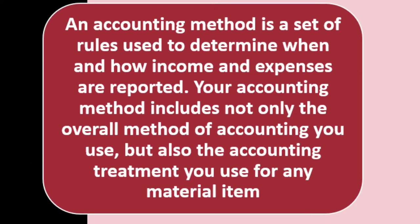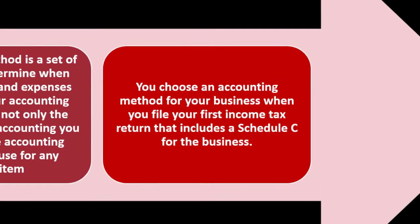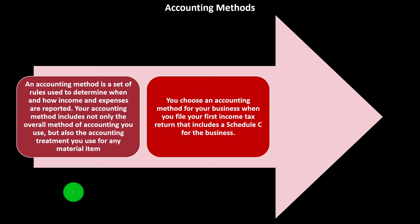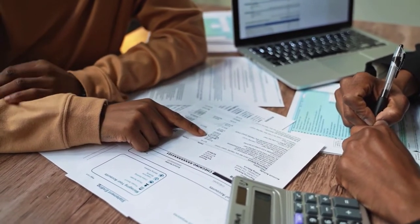An accounting method is a set of rules used to determine when and how income and expenses are reported. Your accounting method includes not only the overall method of accounting you use, but also the accounting treatment you use for any material item. You choose an accounting method for your business when you file your first income tax return that includes a Schedule C. That first return sets the standard — you want to get it right and think it through.